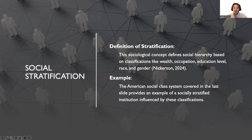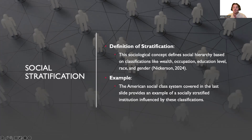To fully dive into the next three slides about American social stratification of social institutions, I wanted to preface by defining what stratification is. Stratification is the sociological concept of defining a social hierarchy by the use of certain wealth, occupation, educational level, race, and gender classifications. The American social class system is a perfect example of a social institution that is socially stratified by these classifications.